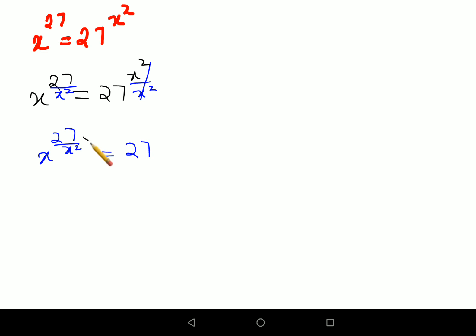Now in order to put the number 27 in the index from your LHS to RHS, we will multiply both the indices by 1 upon 27. So here this is canceling, so x raised to 1 upon 27.